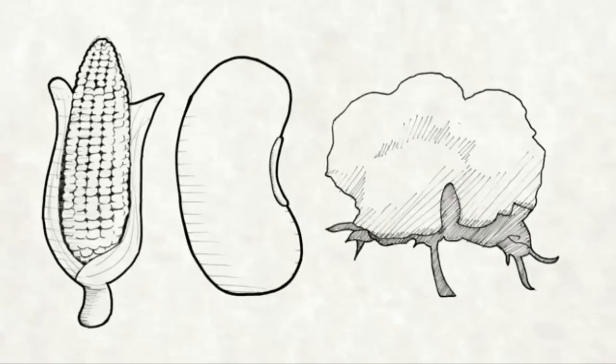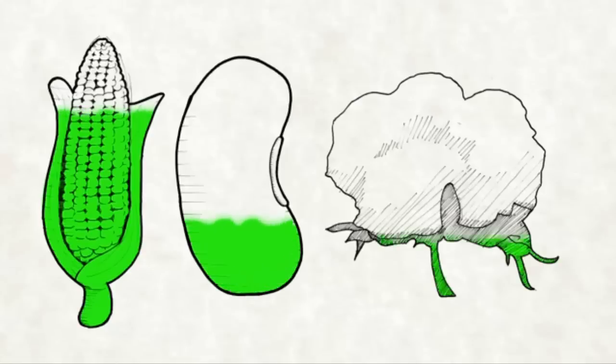Currently up to 88% of corn grown in the US is genetically modified, 91% of soybeans and 88% of cotton are GMO crops as well.